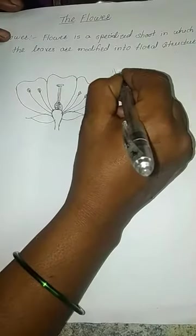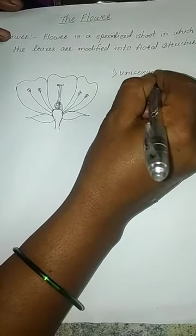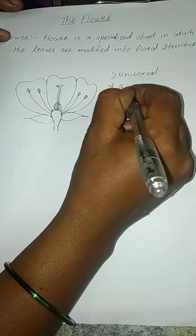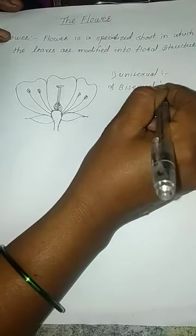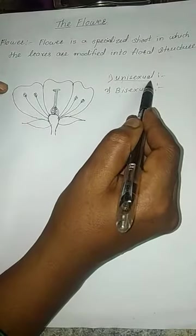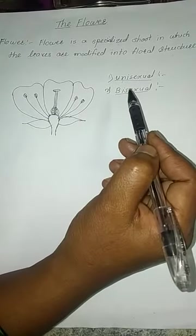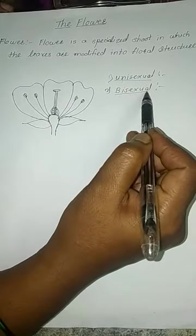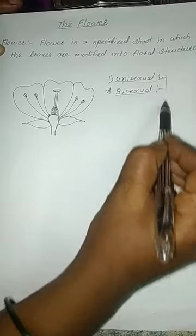There are two types of flower. First is the unisexual flower and second is the bisexual flower. Unisexual means the flower which has only one type of gamete — either male or female. Bisexual means the flower which contains both stamen and carpel. This flower is called the bisexual flower.